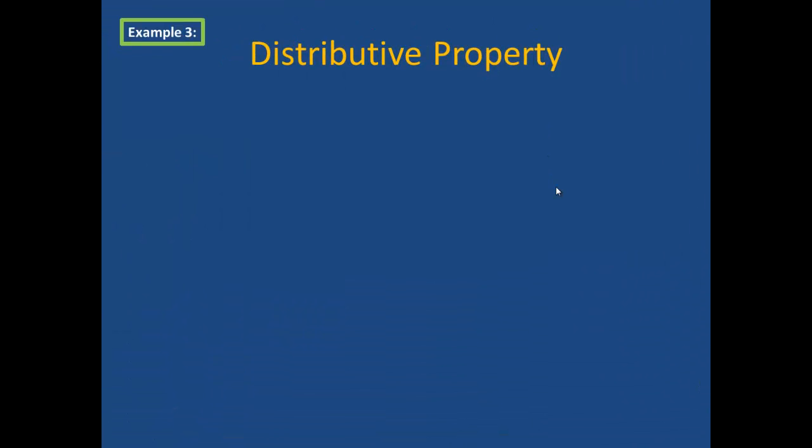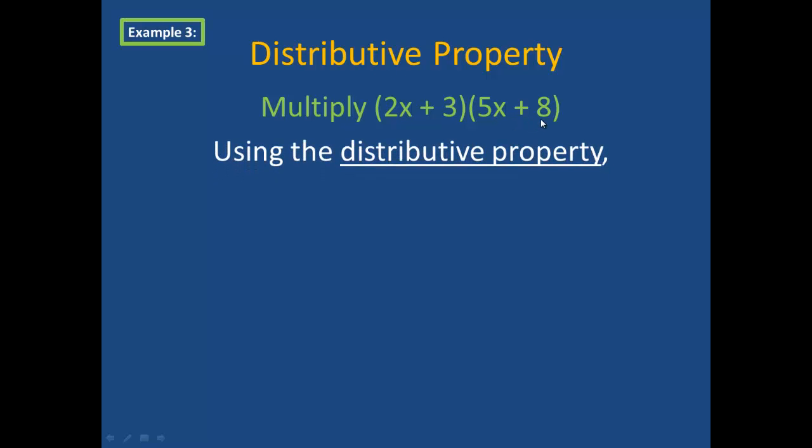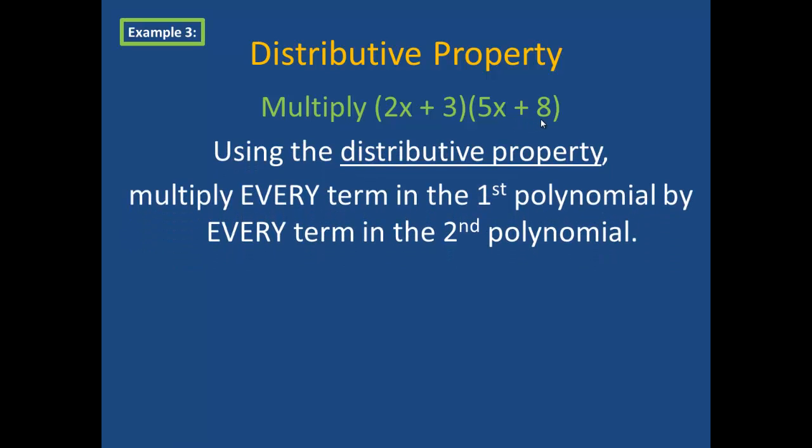First, we're going to take a look at the distributive property. In example 3, we're going to multiply 2x plus 3 times 5x plus 8. We are using the distributive property, so we have to multiply every term in this first polynomial by every term in the second polynomial.